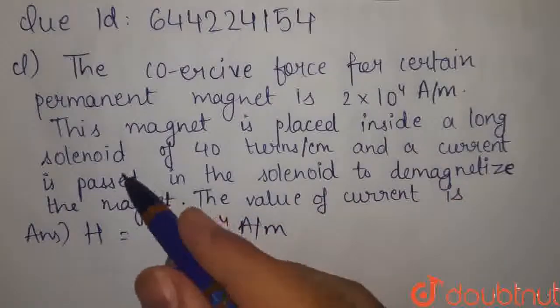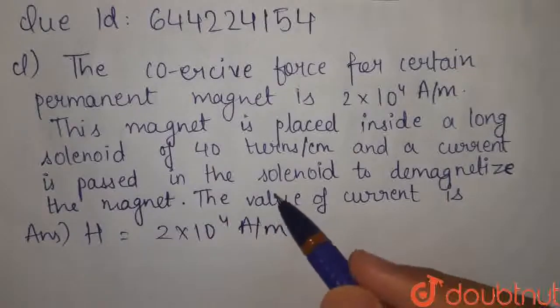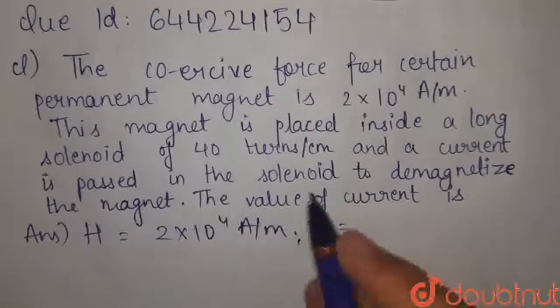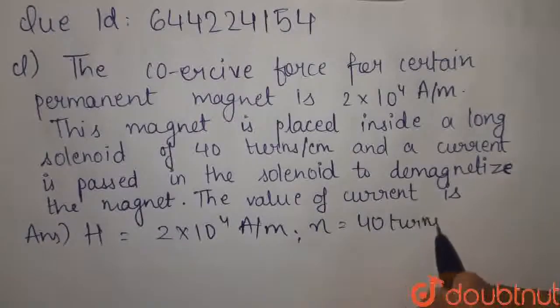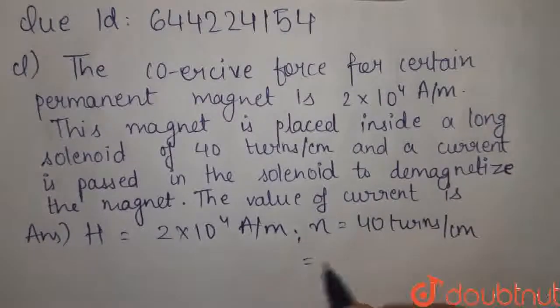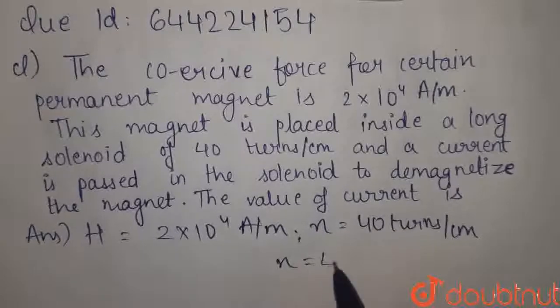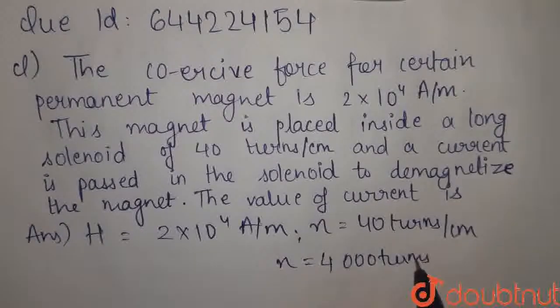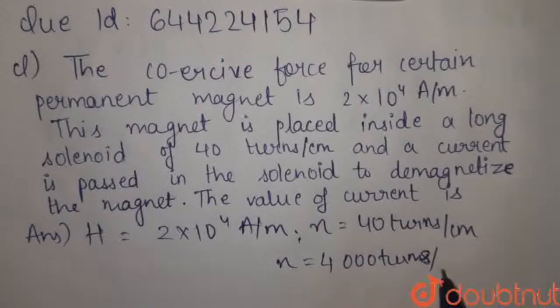Place inside a long solenoid of 40 turns per centimeter. तो मतलब हमें N दिया है, कितने turns per centimeter हुए? 40 turns per centimeter. उसको meter में convert करना है, तो meter में क्या हो जाएगा? 4000 turns per meter.